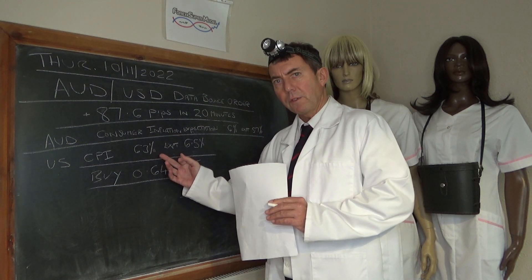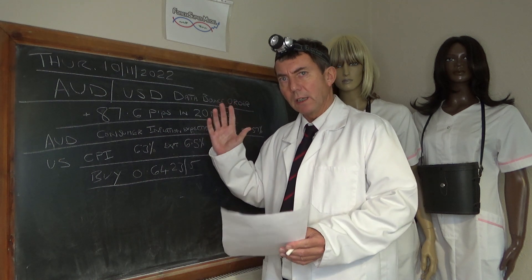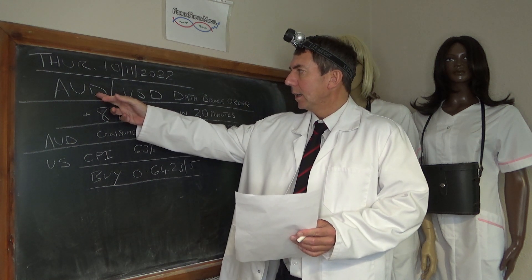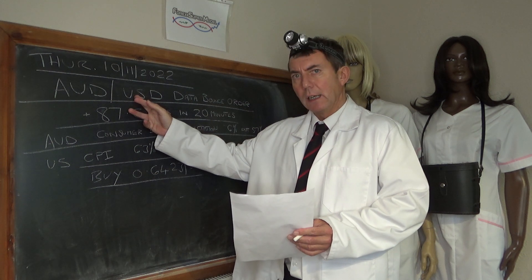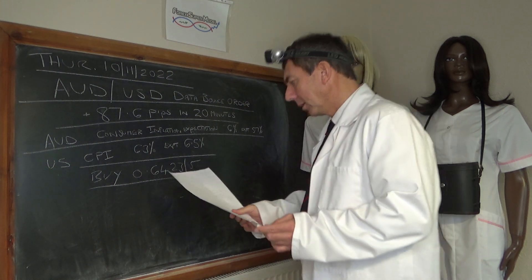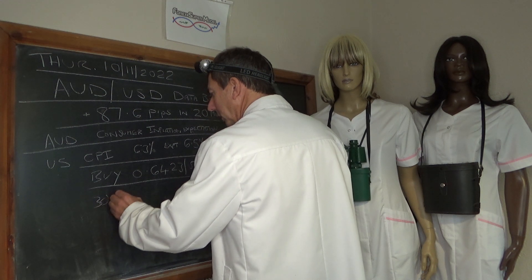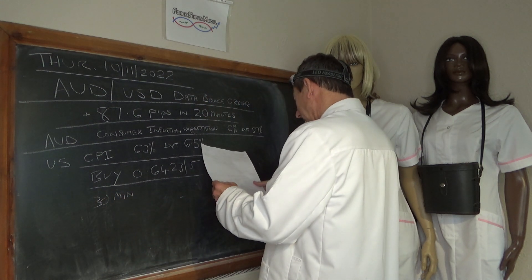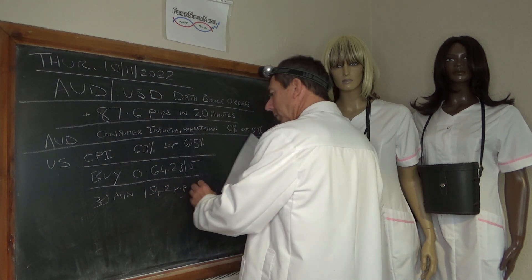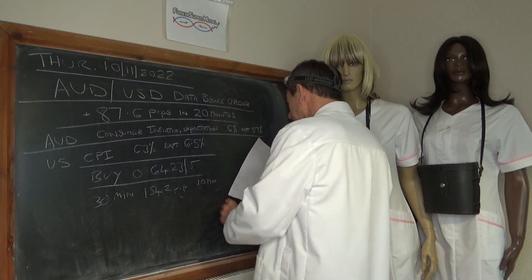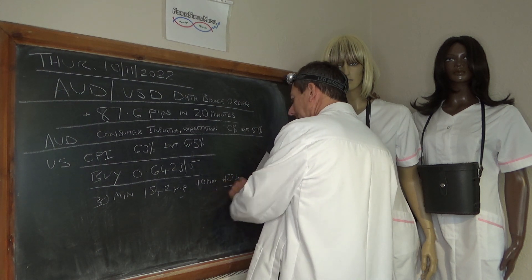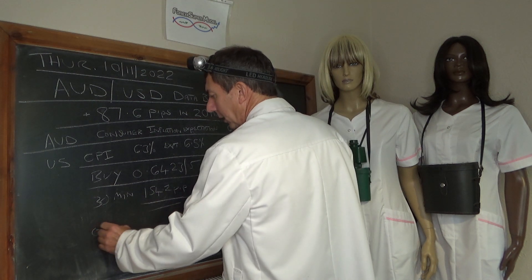The CPI came out soft, which basically meant you had both barrels in your favour — strong AUD data and weak USD data in the very short term. You got this knee-jerk spike, and on the 30-minute graph you're looking at about 154.2 pips. On the 10-minute chart, directly after the data, you're looking at about plus 123.8 pips from the opening to the high.